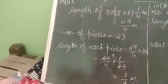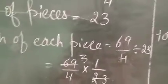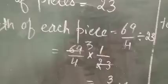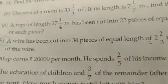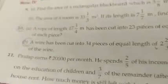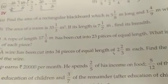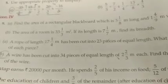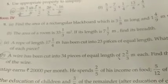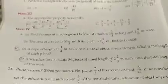Yes. Your next question is 10th question, B part. A wire has been cut into 34 pieces of equal length of 2 and 2/3 meters each. Find the total length of the wire.